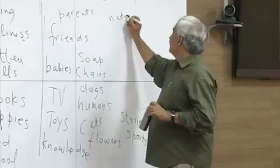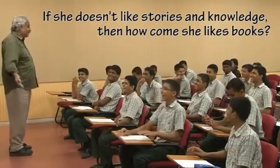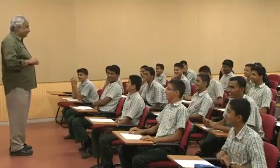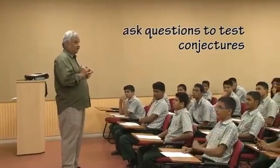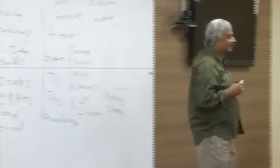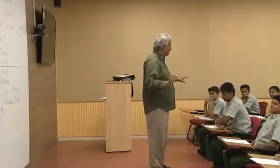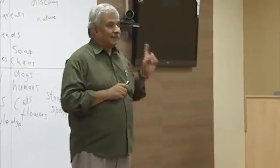I'm going to write Nature, and then say something. If she doesn't like stories and knowledge, then how can she like books? It's for you to figure out. Now, when you ask does she like parents or babies, you have to have some reason for asking — you don't blindly ask. You must have some conjecture. You are asking these questions to test a conjecture. Why did you say parents? What was your guess when you said that? Think of a conjecture, and then ask me a question to get data to see if the conjecture is true.